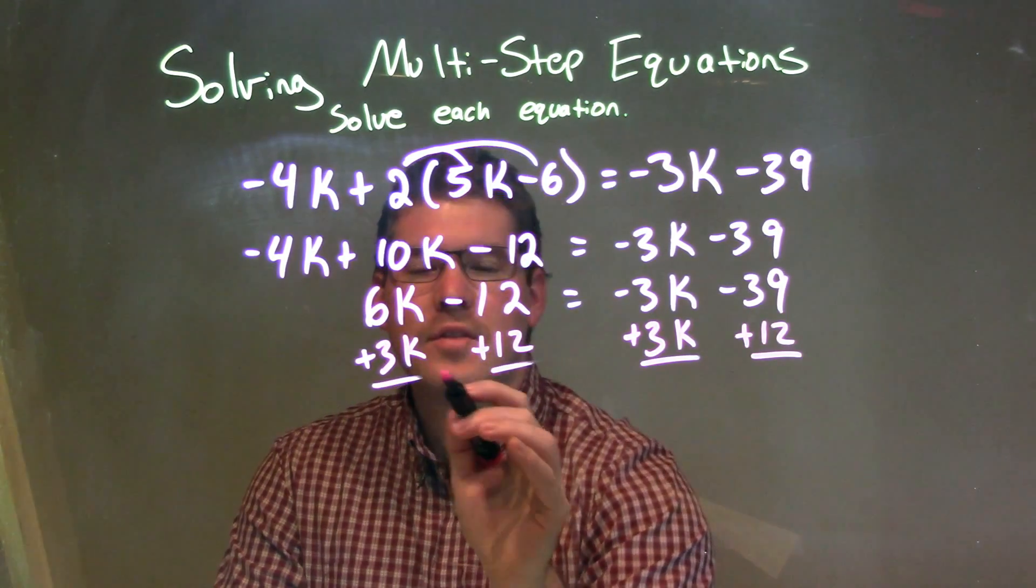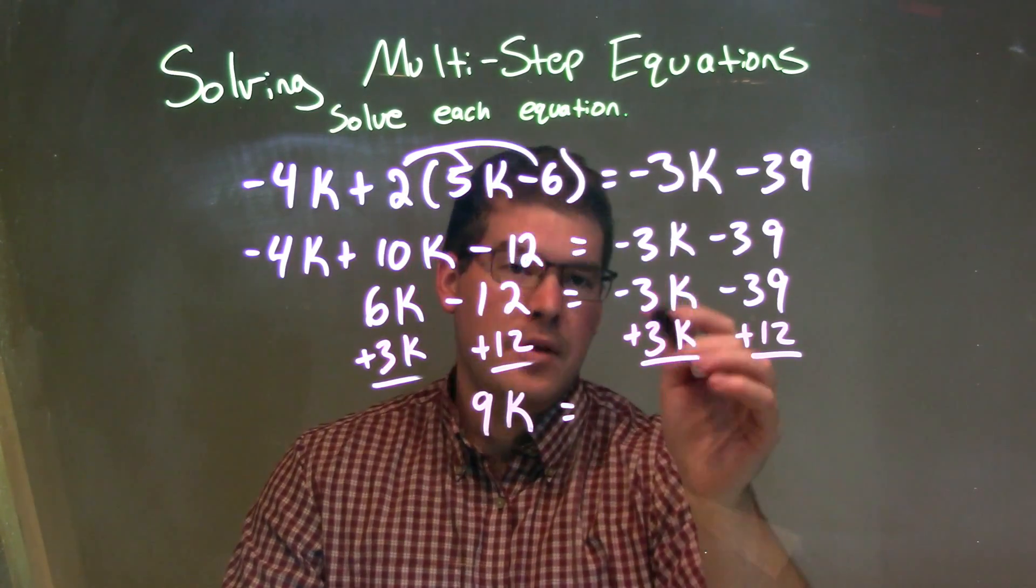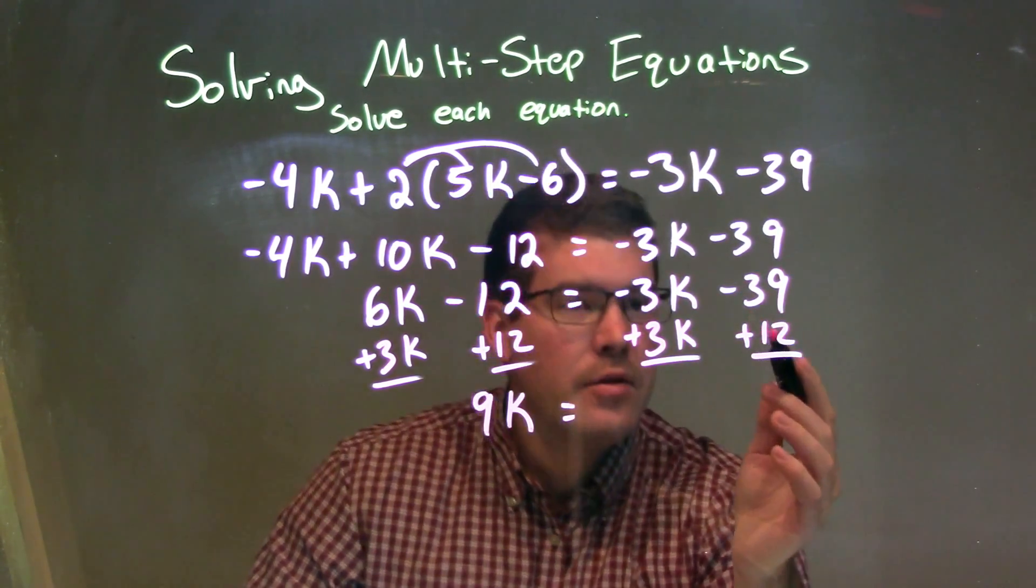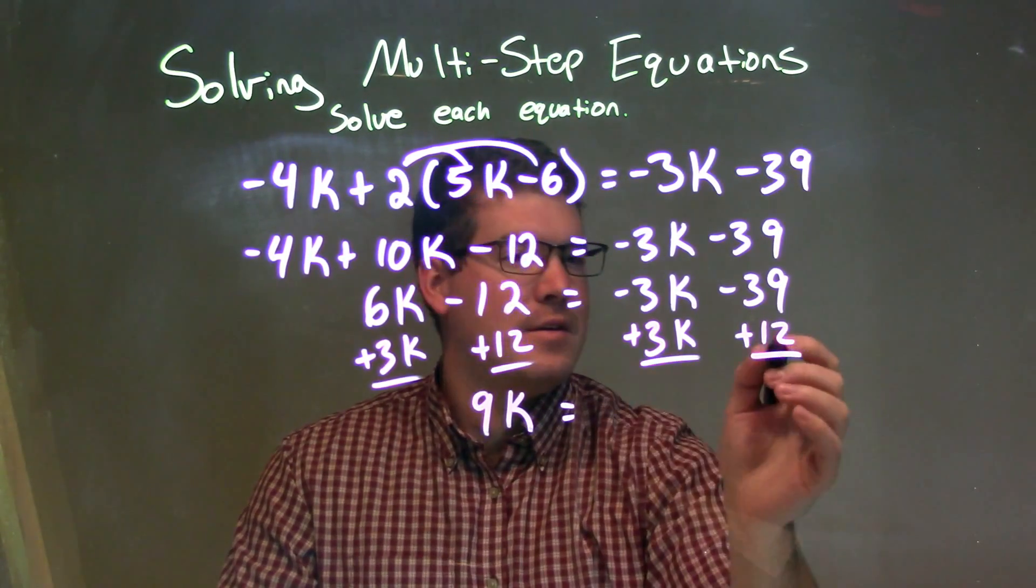That leaves me with 6k plus 3k, which is 9k equal to, right? The 12s cancel. And these 3ks cancel. To negative 39 plus 12. That comes out to be negative 27.